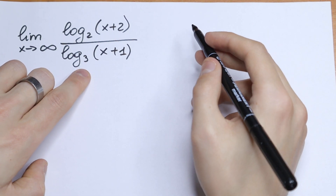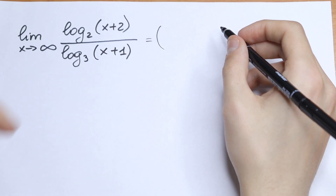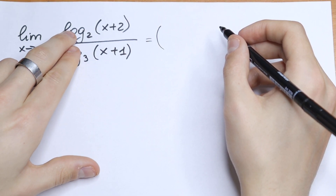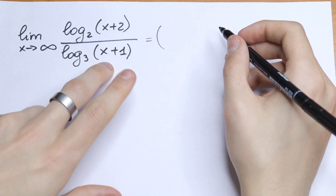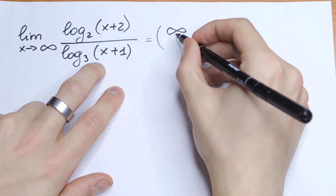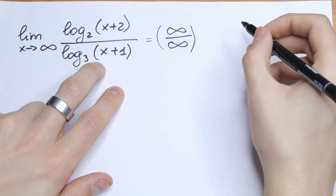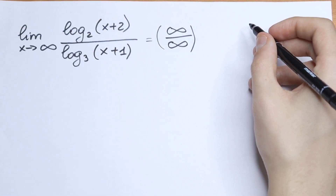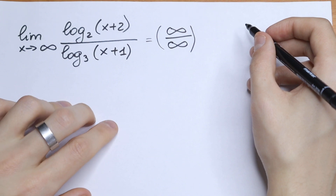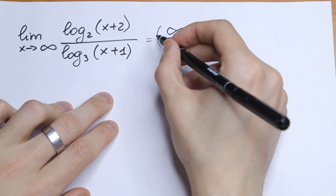What are we going to do in our case? Let's use direct substitution — let's plug in infinity. What we will have? We will have log(∞) over log(∞), so direct substitution gives us infinity over infinity, which is undefined. So we need to find a trick right here.